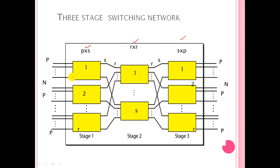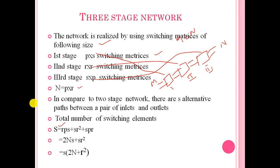Both input and output sides have n lines because m is equal to n, where p is the number of inlets and outlets. There are r blocks in the first stage, s blocks in the second stage, and again r blocks in the third stage, because we assume the first and third stages use square switching matrices.